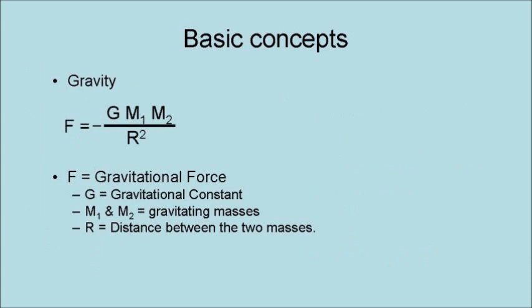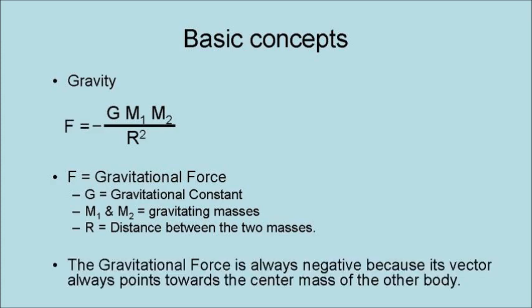In classical mechanics, gravity is the dominant natural force. The force of gravity equals minus the gravitational constant times the mass of the first object times the mass of the second object divided by the square of the distance between the two masses. Note that the gravitational force is always negative because its vector always points towards the center of mass of the other body.